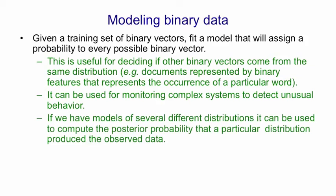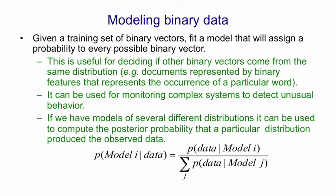If you have models of several different distributions, you can compute the posterior probability that a particular distribution produced the observed data by using Bayes' theorem. So given the observed data, the probability it came from model I, under the assumption that it came from one of your models, is the probability that model I would have produced that data divided by the same quantity for all models.